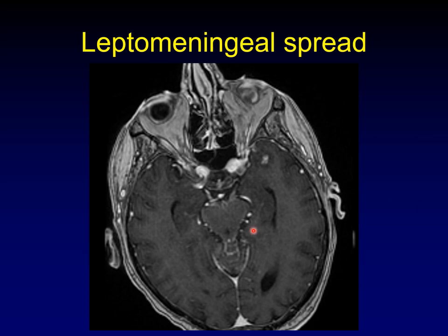If you saw this enhancement along cranial nerve three, both sides, it would be very easy to say that's perineural spread of malignancy. It looks just like the lymphoma case shown at the beginning of the lecture. The only clue here is that there are other examples of leptomeningeal spread in this patient with breast cancer, particularly in the superior aspect of the posterior fossa.